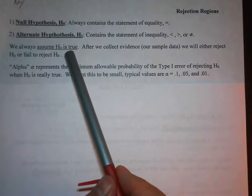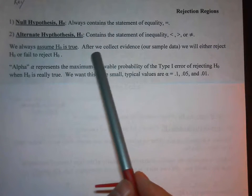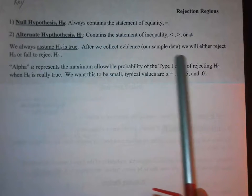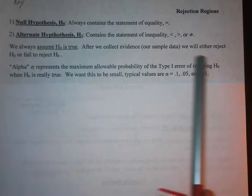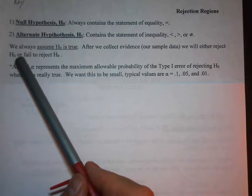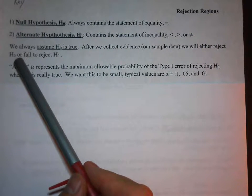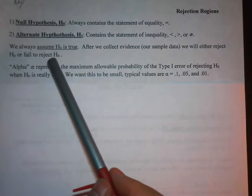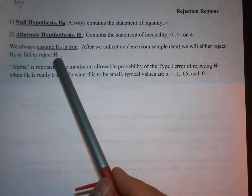Then what we do is we collect evidence — our sample data — and then we either reject H₀, the null hypothesis, or we fail to reject the null hypothesis.